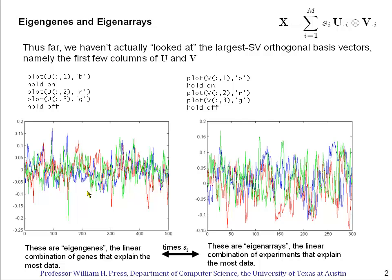So sometimes a little bit fancifully, people call these functions on the left eigengenes. That is to say, they are the linear combination of genes that explain the most data.